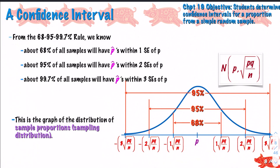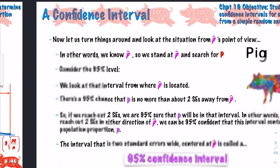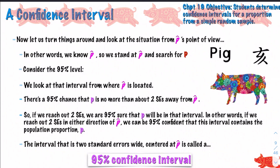From the 68-95-99.7 rule, we know about 68% of all samples will have sample proportions within one standard deviation of p. About 95% of all samples will have sample proportions within two standard deviations of the true population proportion, and about 99.7% of all samples will have p-hats within three standard deviations of the true population proportion. This is the graph of the distribution of sample proportions from Chapter 18 - we're leveraging this to ask: how sure can we be that our interval contains the true population proportion?